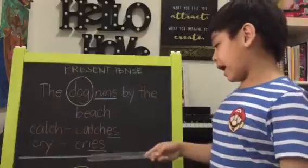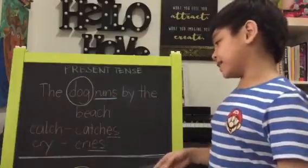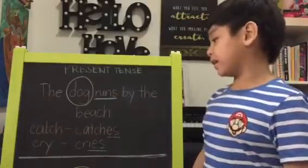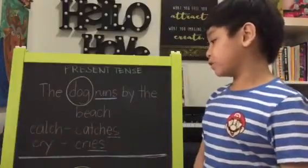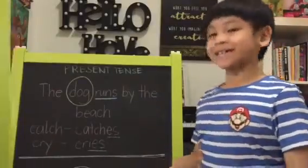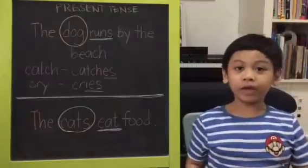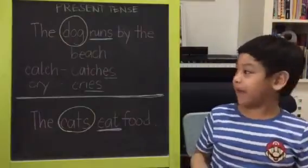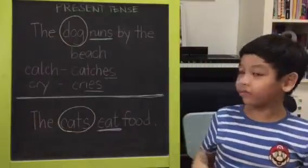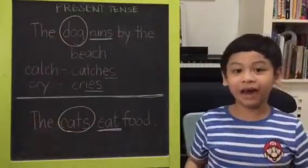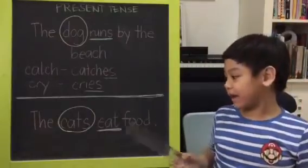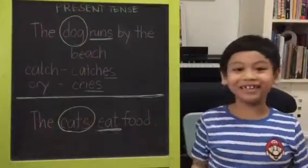We add IES when the verb ends with Y. Second rule: we use the base form of the verb when the noun is plural.